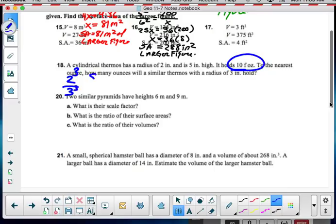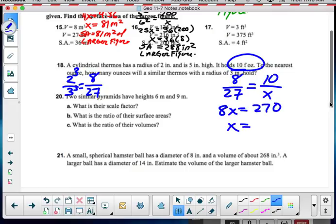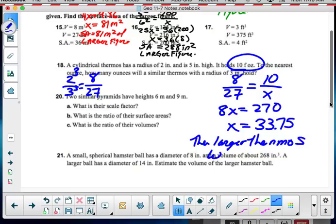So, this is going to be 8 to 27. So, I've got a setup of 8 to 27. And 8's to small. So, 10 fluid ounces to how many fluid ounces? 8x is equal to 270. And I divide 270 by 8. And I get 33.75. But if I read the problem, they say, to the nearest ounce. So, my nearest ounce, the larger thermos will hold 34 ounces.